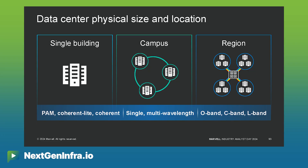In the future, you have very high volume but shorter distance links within the building doing PAM. You have very long links of hundreds of kilometers doing full coherent. And then you have the intermediate links from two kilometers to 20 kilometers that are now Coherent Light, which give you the distance benefit of coherent but also the TCO and low latency of a PAM-like architecture.